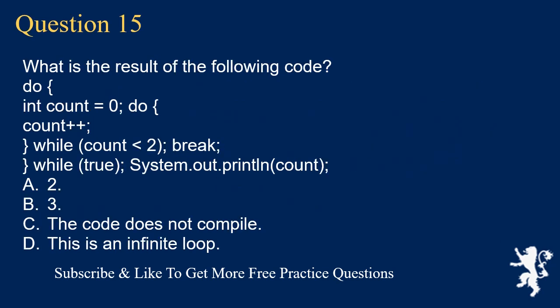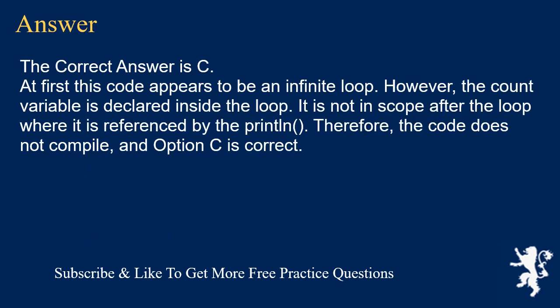Question 15. What is the result of the following code? do { int count = 0; do { count++; } while (count < 2); break; } while (true); System.out.println(count); A. 2. B. 3. C. The code does not compile. D. This is an infinite loop. The correct answer is C. At first this code appears to be an infinite loop. However, the count variable is declared inside the loop. It is not in scope after the loop where it is referenced by the println. Therefore, the code does not compile, and option C is correct.